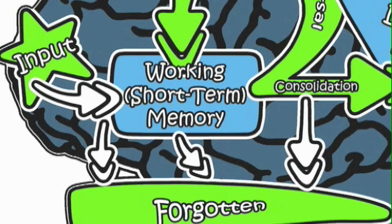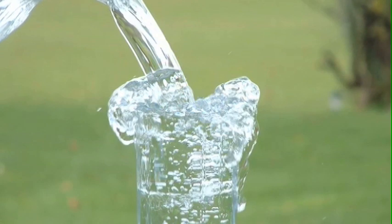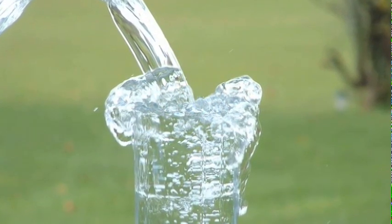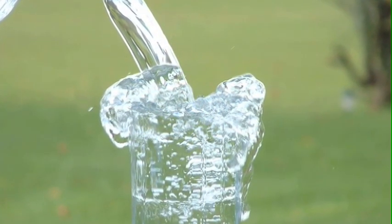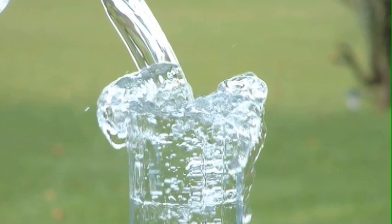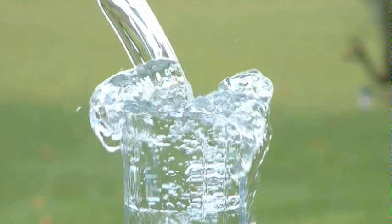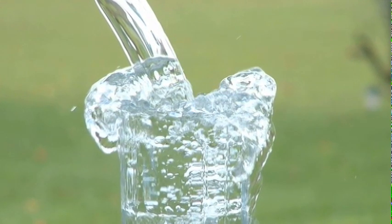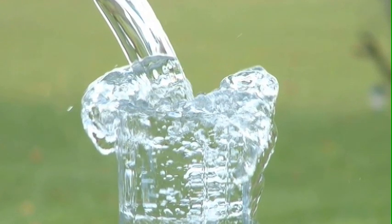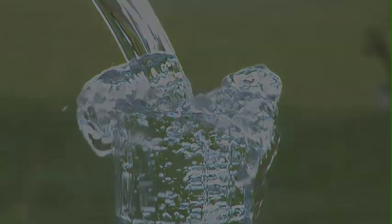Not only is the storage of information in short-term memory brief, but it's also very limited in capacity. We can only place a few bits of new information into short-term memory before it's filled, and new information begins to replace previously stored information — somewhat like when we overfill a glass of water. This is essentially what happens when we're trying to memorize a telephone number and someone comes up and talks to us, and we completely forget the number. Essentially, we're replacing the number in our short-term memory with the new information that the person has given us.